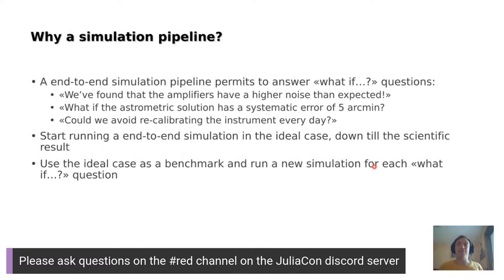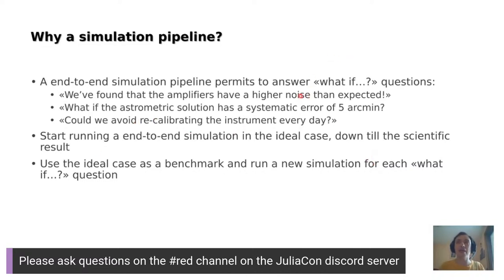Once you have this simulation pipeline, it can be used to answer so-called what-if questions, where one assumes the instrument exhibits some non-ideal behavior and wants to estimate its impact on the scientific outcome. What if the level of noise is this or that? What if we make some mistake in deriving astrometric coordinates? You simply run the pipeline in the nominal case, then rerun it including the non-ideality you want to study, and compare the results.